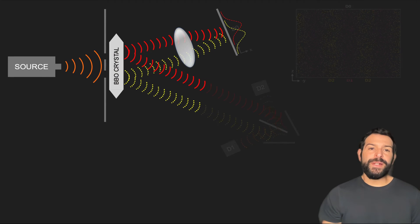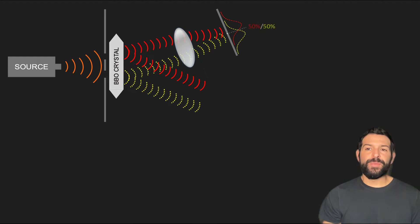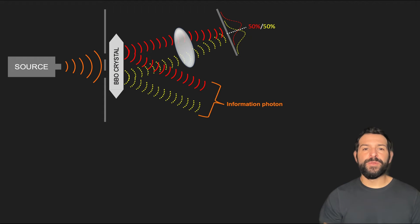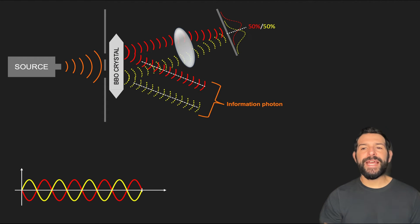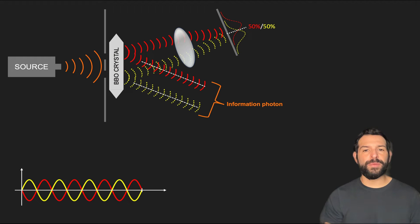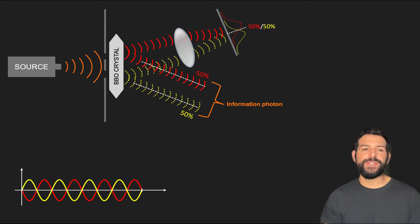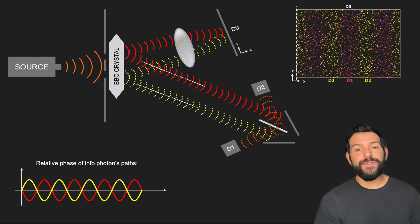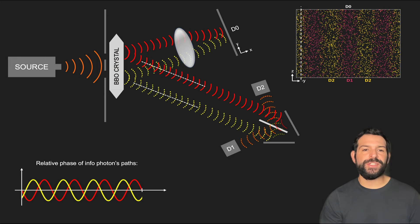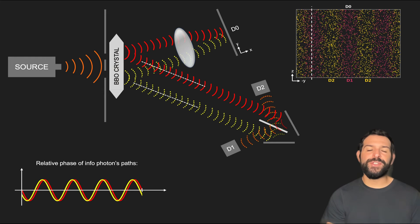Recall how we mentioned that once the screen photon gets localized at some point in D0, the information photon will still carry the probability amplitudes of having gone through the top slit or the bottom slit associated with that particular location. Furthermore, the relative phase of these two paths also changes depending on the location of the screen.